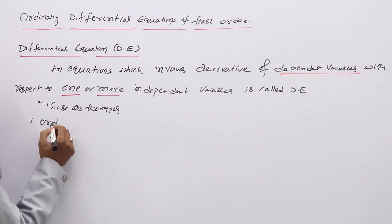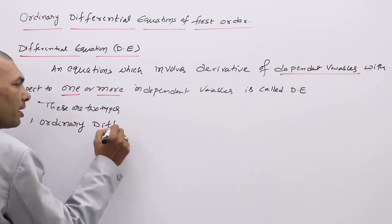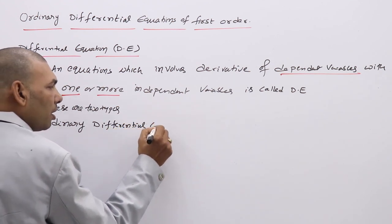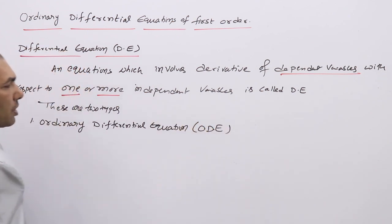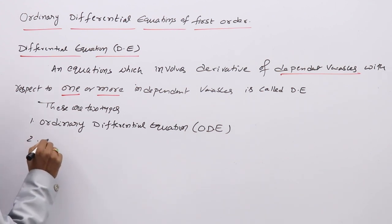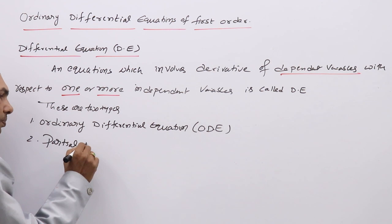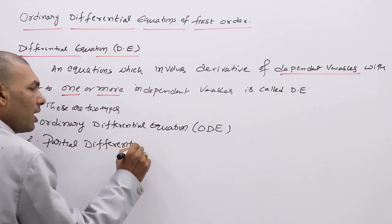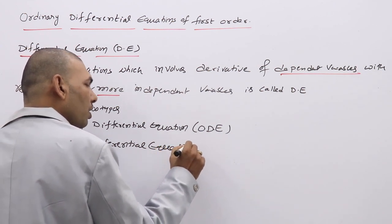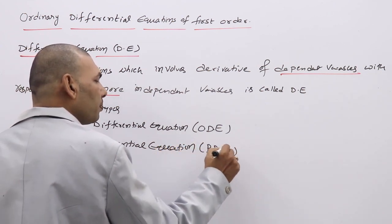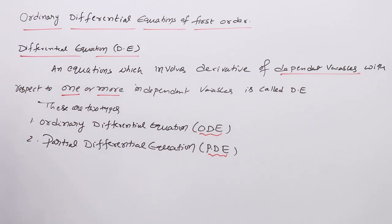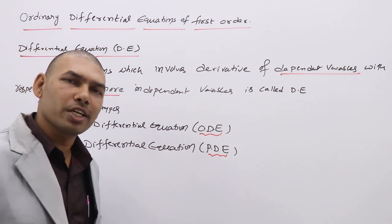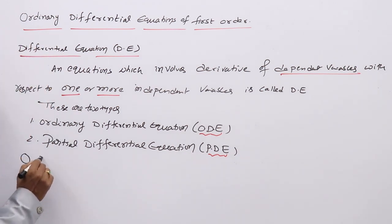The two types are: ordinary differential equation and partial differential equation, abbreviated as PDE. Our current discussion is on ordinary differential equations. Even so, we will also define what a PDE is. So, what is an ordinary differential equation? What is ODE?